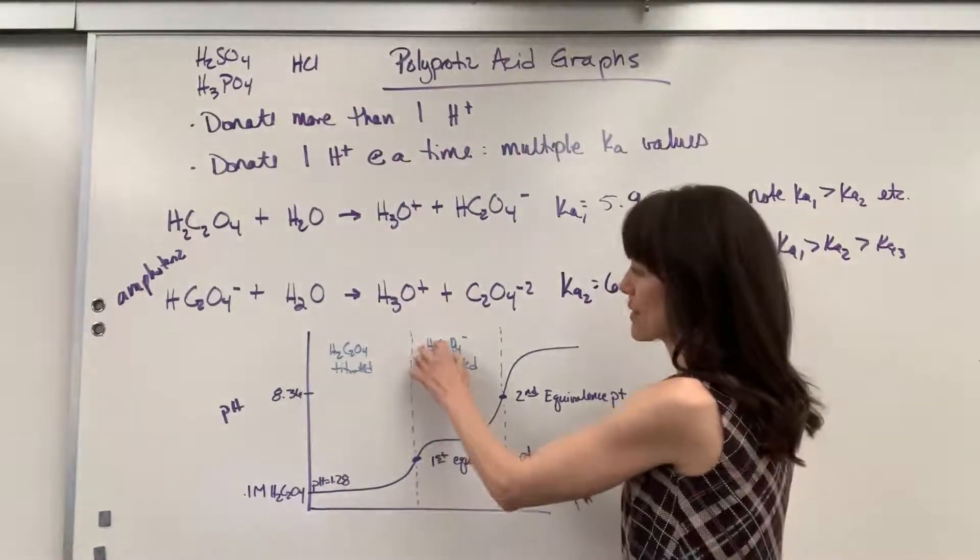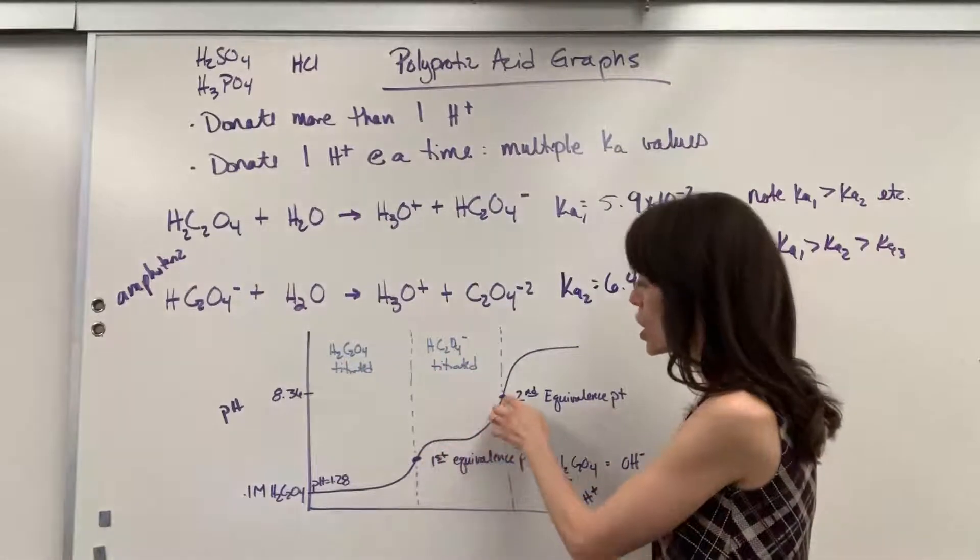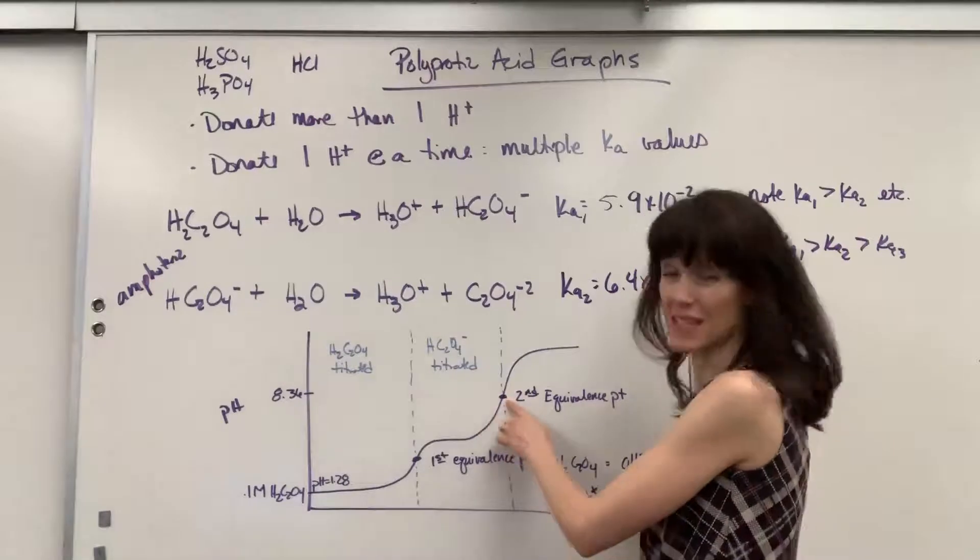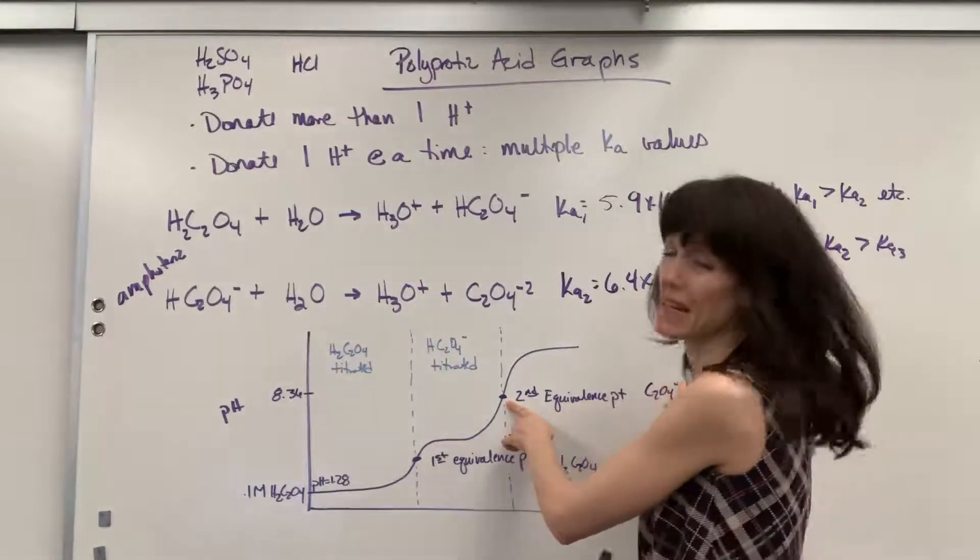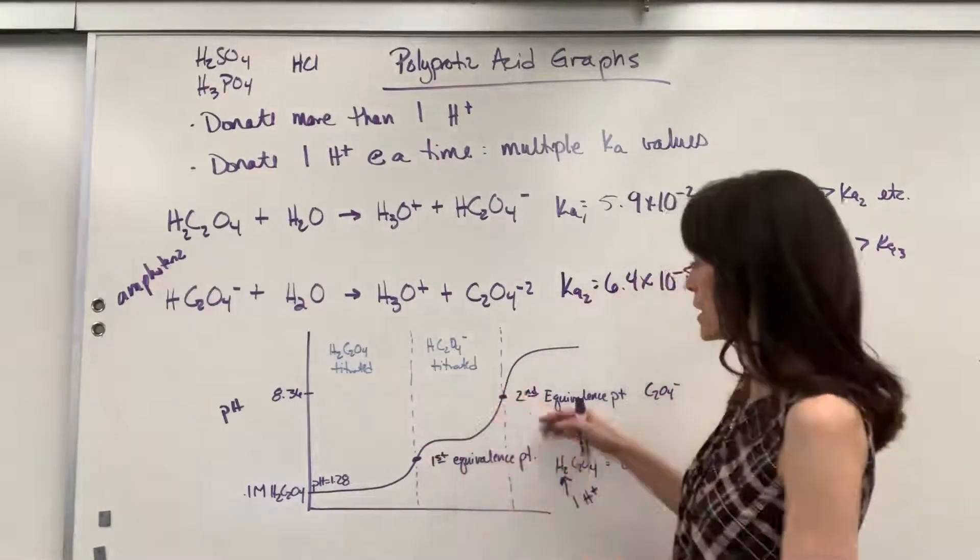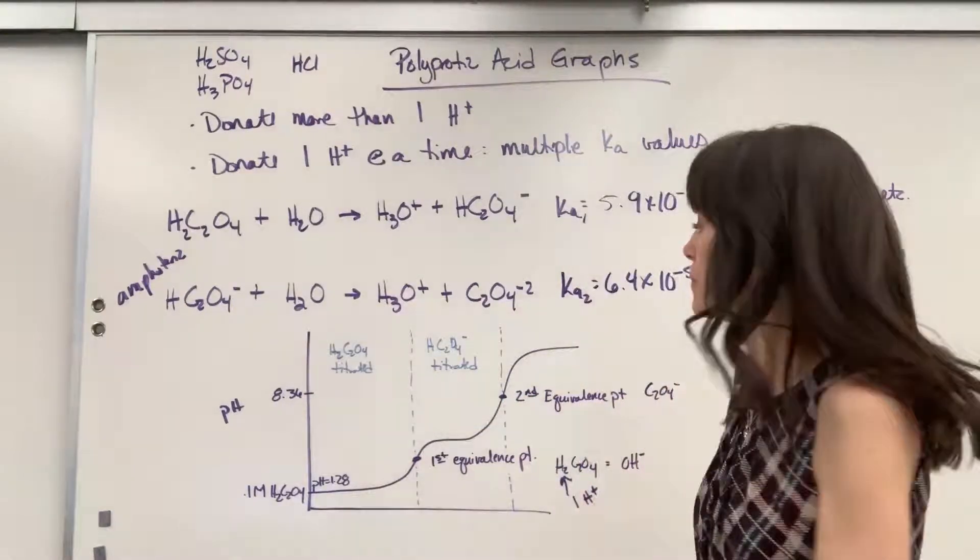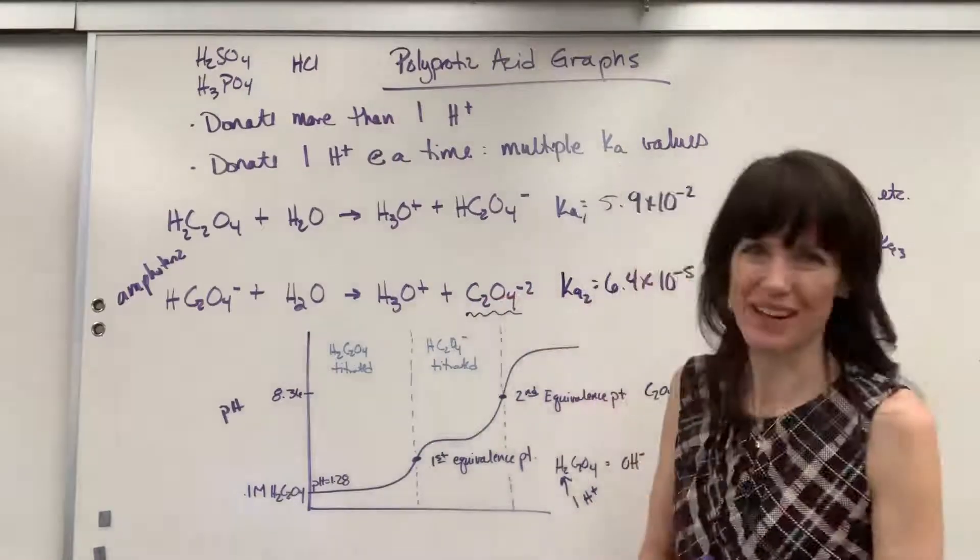The second hydrogen right there is that hydrogen, the HC2O4 minus. So this titration right here is going to be that hydrogen. So when I'm at this point, the only thing that's left is that C2O4 minus. That second hydrogen has been completely titrated. And here we have our second equivalence point, and that happens at 8.36.